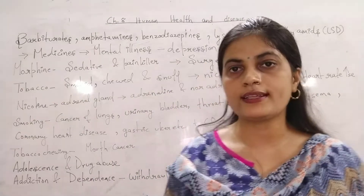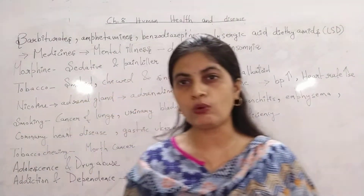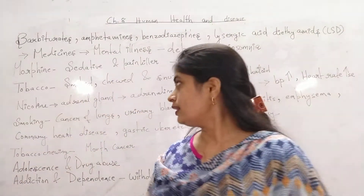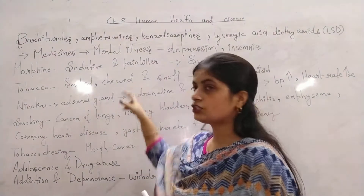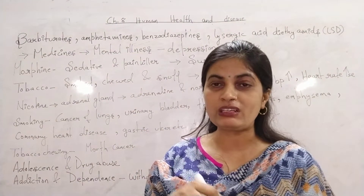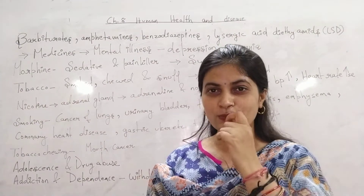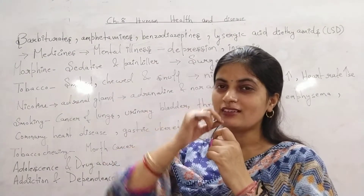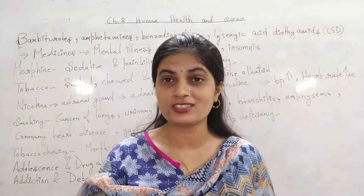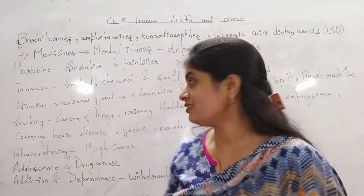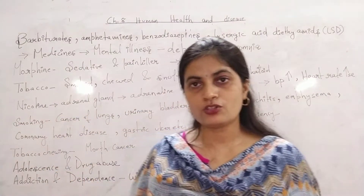Next: tobacco. How is tobacco taken? We know that it is smoked in the form of cigarettes. It is also chewed — people just keep it in their lower or upper lip, which looks very bad. Then there is snuffing — they also snuff that tobacco.